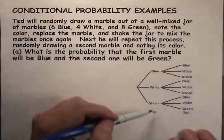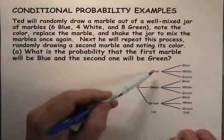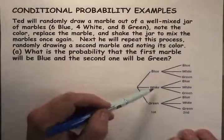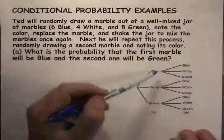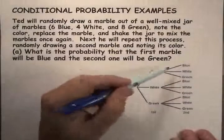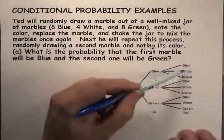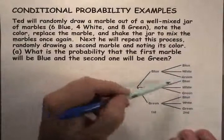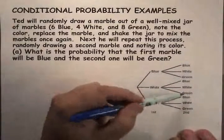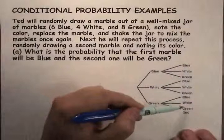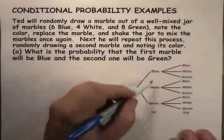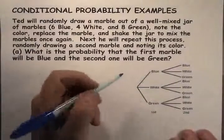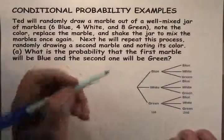Here's a tree diagram that represents the first draw. Ted can either get a blue, white, or green. On the second draw, once Ted gets a blue, he has three choices. Once he gets a white, he has the same three choices. And once he gets a green, the same three choices. Now I'd like to label some probabilities on this.